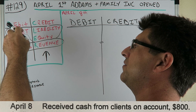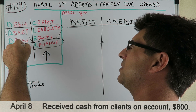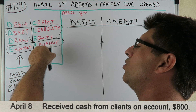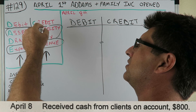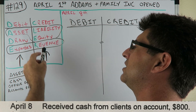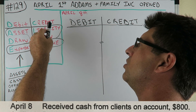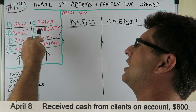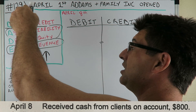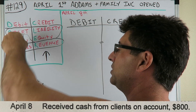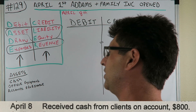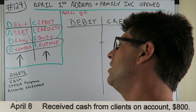If an asset, draw, or expense is increasing, we debit it. If an asset, draw, or expense is decreasing, we credit it. If a liability, equity, or revenue is increasing, we credit it. If a liability, equity, or revenue is decreasing, we debit it.